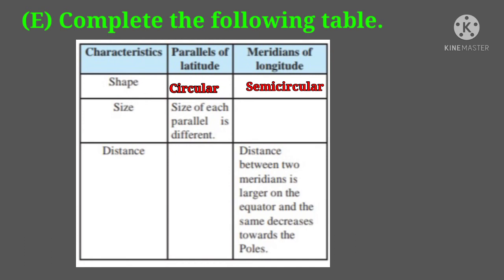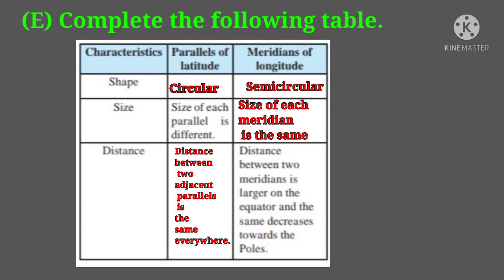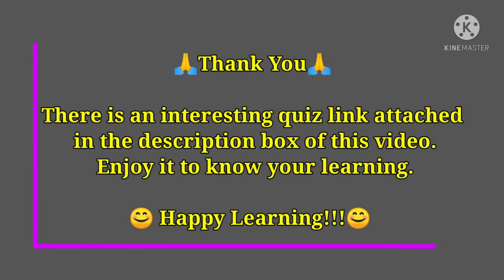Second characteristic — size: the size of parallels of latitude is different from each other, while the size of each meridian is the same. Third characteristic — distance: the distance between two adjacent parallels of latitude is the same everywhere, while the distance between two meridians is largest on the equator and decreases towards the poles.